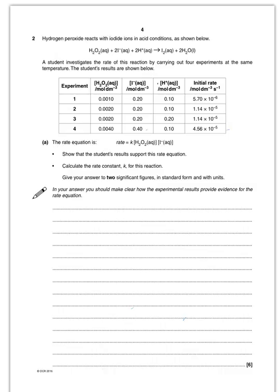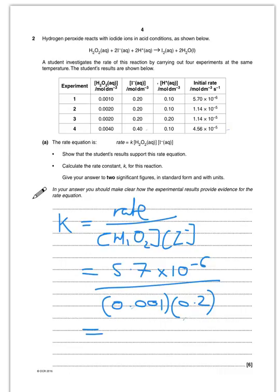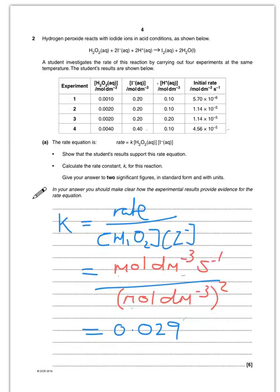Now I just need to calculate the rate constant. The rate constant equals the rate divided by the concentration of peroxide times the concentration of I minus. Using experiment one, the rate is 5.7×10⁻⁶, divided by 0.001 times 0.2. To two significant figures that's 0.029. For the units, replacing numbers by units and cancelling gives mol⁻¹ dm³ s⁻¹.